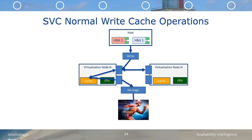With SVC write cache enabled, during normal write cache operations, a host write will enter the preferred node's cache, and then it will be sent to the partner node. Upon completion of the write by the partner node, the host receives an acknowledgement that the write has completed.